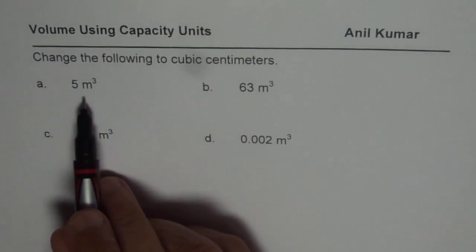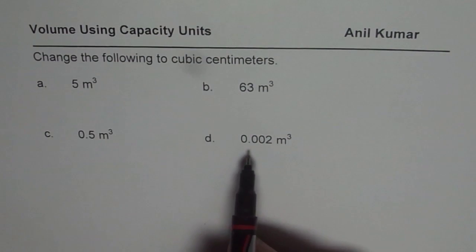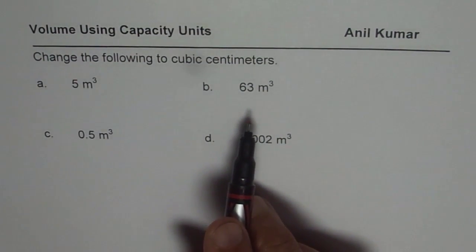We have four questions here: 5 meter cube, 63 meter cube, 0.5 meter cube, 0.002 meter cube. You need to convert them to centimeter cube.